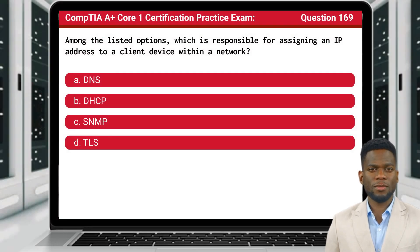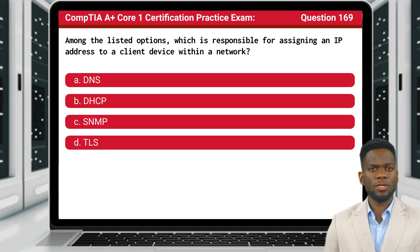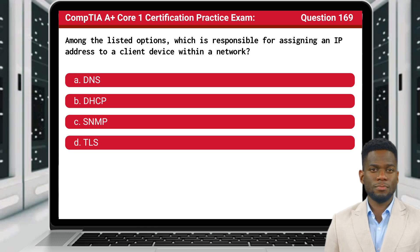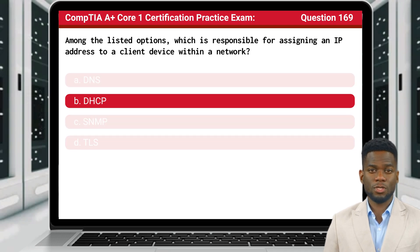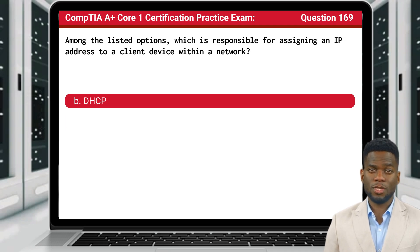Question 169. Among the listed options, which is responsible for assigning an IP address to a client device within a network? The answer is B: DHCP.